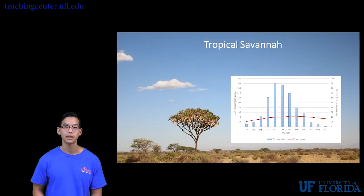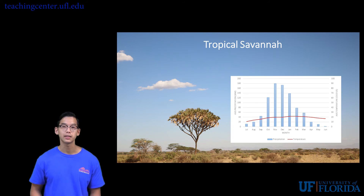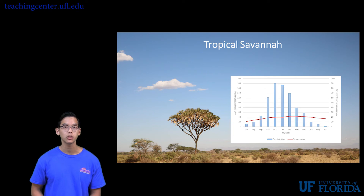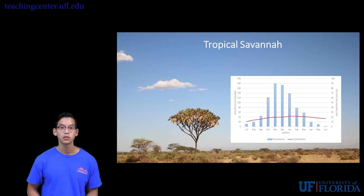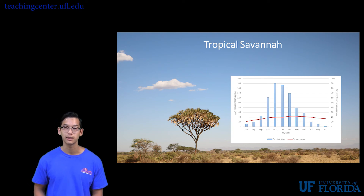Finally, we'll be going over the tropical savanna and seasonal forests. This biome is similar to the tropical rainforest but has more distinct wet and dry seasons with more changes in precipitation. Disturbances are common and help maintain this biome. Giraffes, gazelles, and elephants inhabit this land. Pause the video and copy the following chart describing all of our biomes.